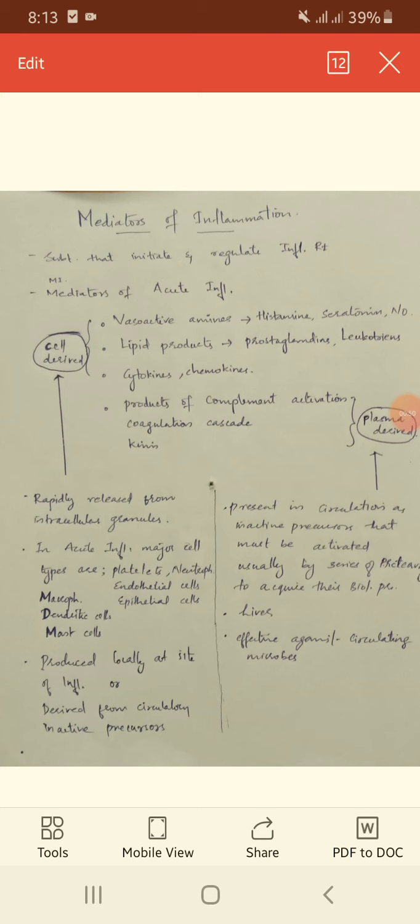Mediators of inflammation can be divided into cell-derived and plasma-derived. Cell-derived mediators include histamine, serotonin, nitric oxide, lipid products like prostaglandins, leukotrienes, cytokines, and chemokines.